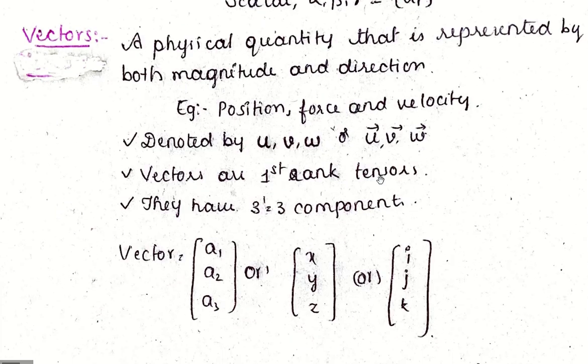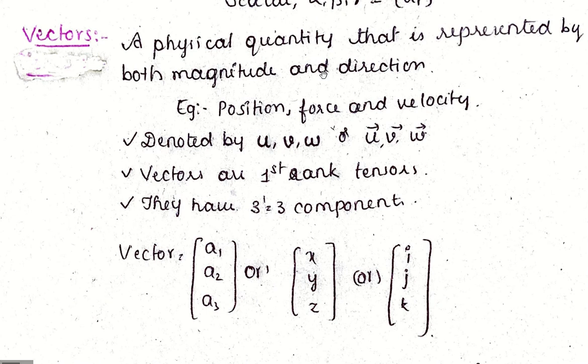If we see vectors, vectors are physical quantities that are represented by both magnitude and direction. For example, force, position, and velocity. They have some magnitude and direction. These are denoted by small bold alphabetical letters U, V, W, R.